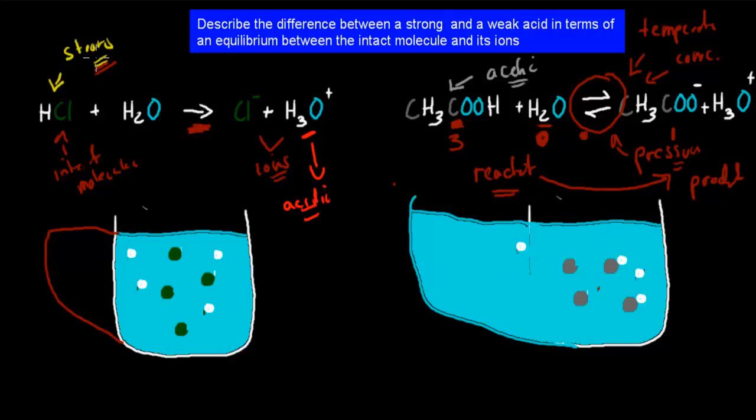Yeah, that's the most important part from this dot point. So describe the difference between a strong and a weak acid in terms of the equilibrium between the intact molecule and its ions. And for a strong acid, at the end, there will be no more of the intact molecule left. It will all have dissociated into its ions, as we saw here. Whereas for the weak one, we're going to have not all of them, so there will be still some intact molecules.